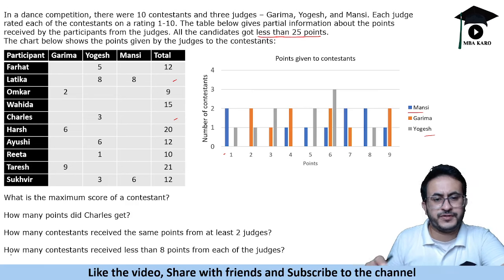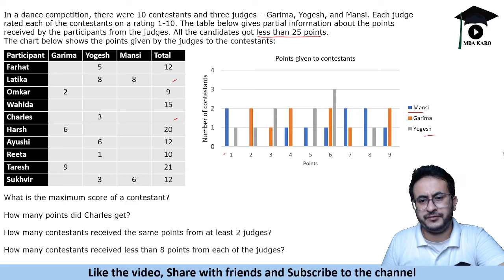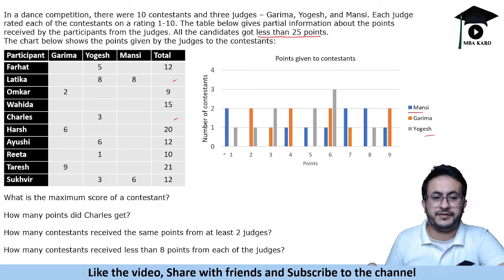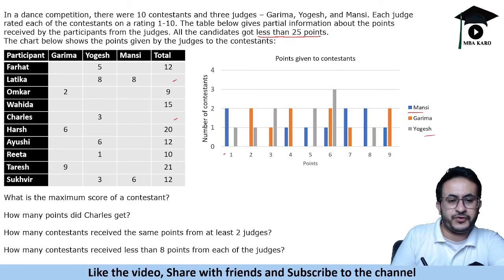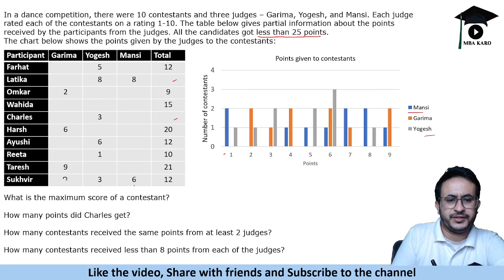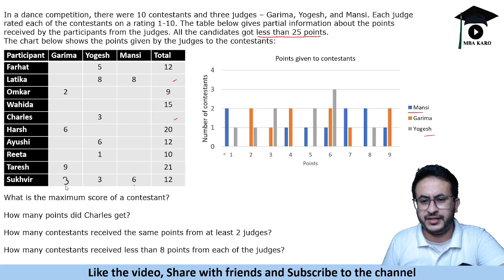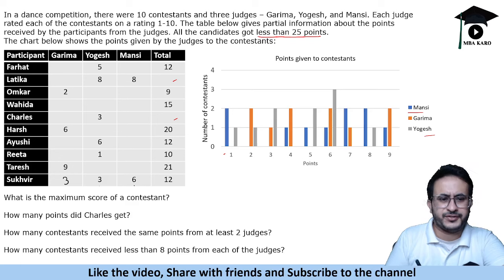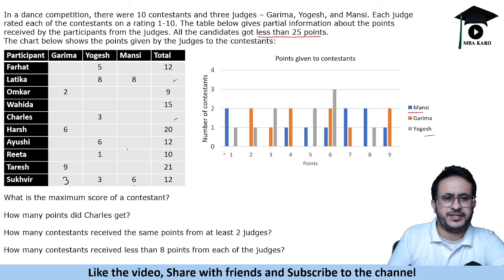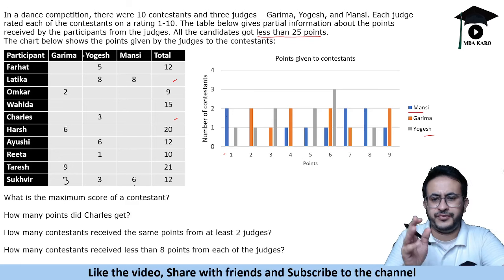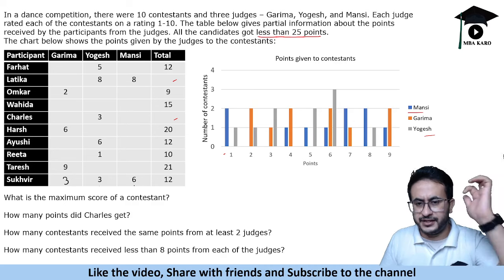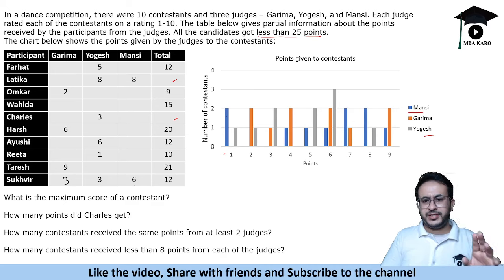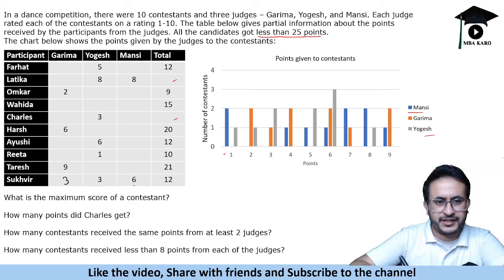In such scenarios, we should try to fill data which can be directly filled — the data which is maximum filled. The first step should be to fill the values we can directly determine. Now, if you see, we need to look both horizontally as well as vertically. It is a table and you need to consider the horizontal as well as vertical nature.